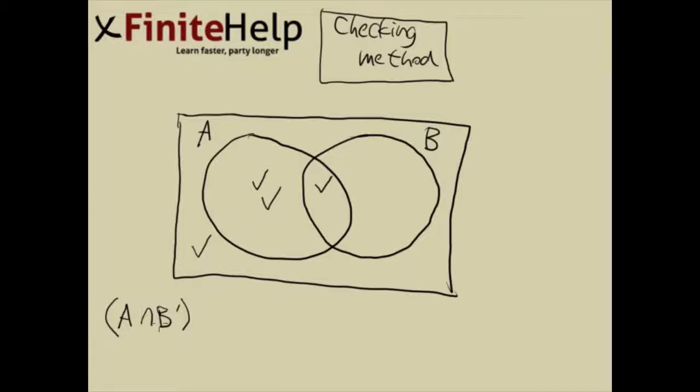Here, this is intersection. Intersection. Another way to think about that is this is the word AND. So this new set includes everything that's in A and B prime.